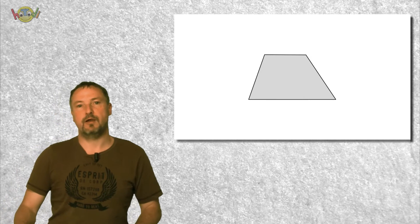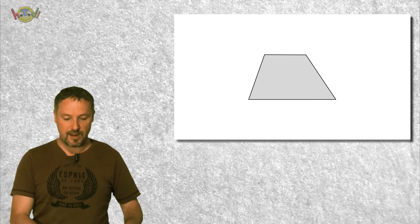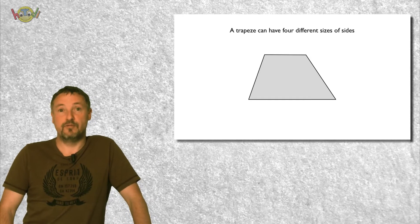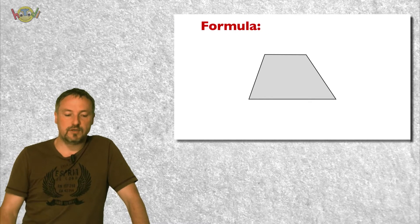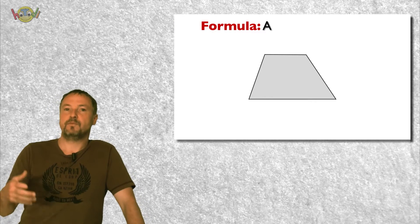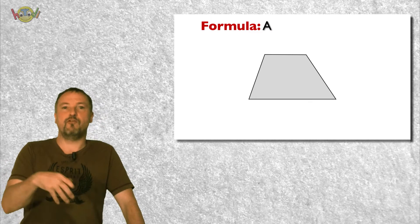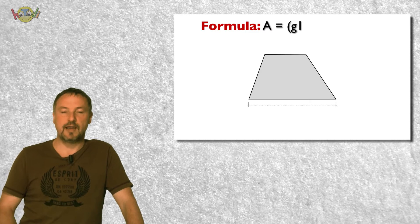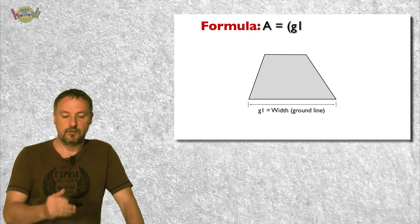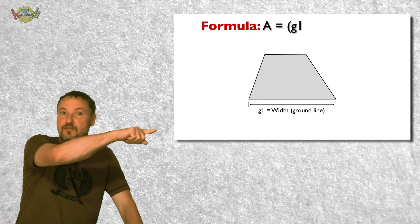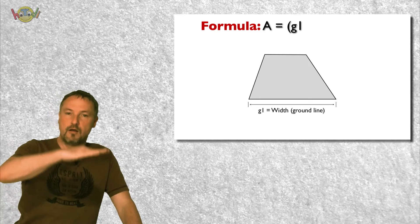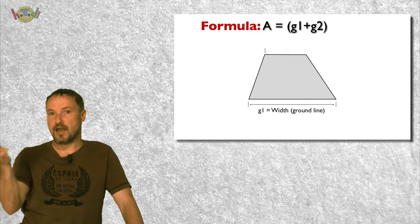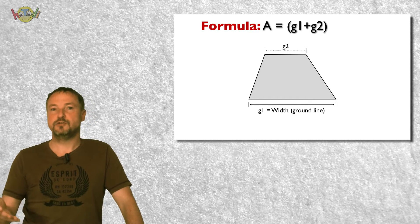We want to talk about how to calculate the area of this trapezoid. And believe it or not, it's really simple. We have to pick up the formula for the area. We have a ground line one — G1 — which is the first horizontal on the bottom. We have another horizontal line, we call this G2.